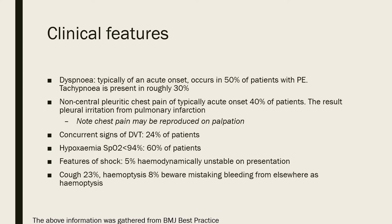There might be concurrent signs of DVT in 24% of patients — unilateral leg swelling, erythema, and tenderness in the calf. Hypoxemia occurs in 60% of patients with SpO2 less than 94%. Features of shock are present in 5% who are hemodynamically unstable on presentation. Cough is only present in 23% of patients, and hemoptysis — that classical sign — is only present in 8%, and is often mistaken for bleeding from elsewhere such as an oral or esophageal bleed.